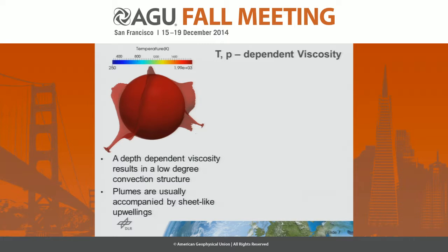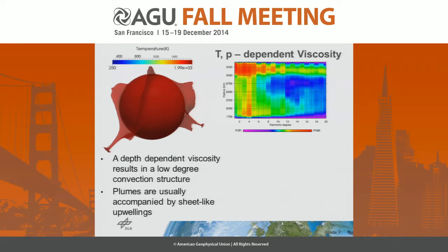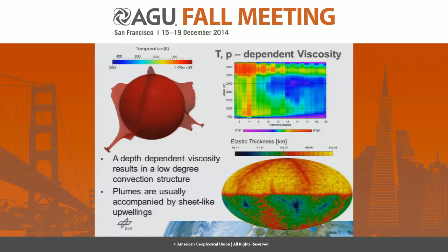With depth-dependent viscosity, we obtain a low-degree convection pattern, and plumes are usually accompanied by sheet-like structures. A spherical harmonic analysis shows a dominant degree-four pattern in the mantle. Looking at the elastic thickness computed from this model, we again observe the dichotomy — small elastic thickness above the upwellings and large elastic thicknesses above the downwellings. The highest value is about 224 kilometers, which is significantly lower than the 300-kilometer estimate.